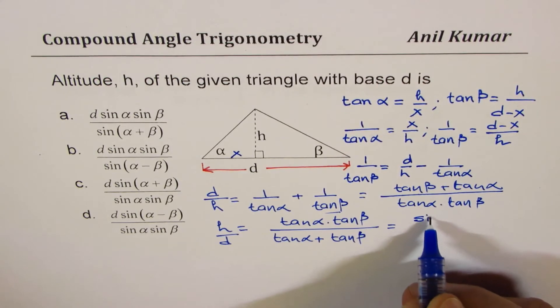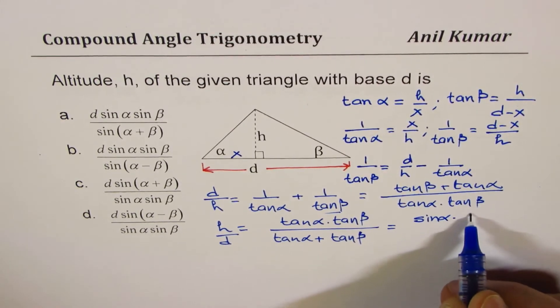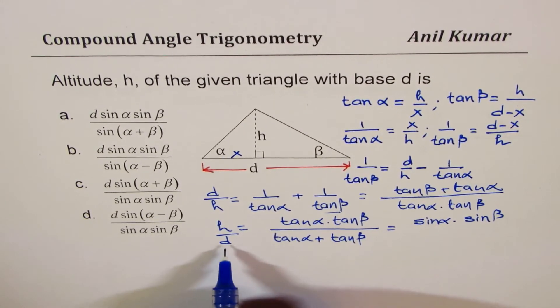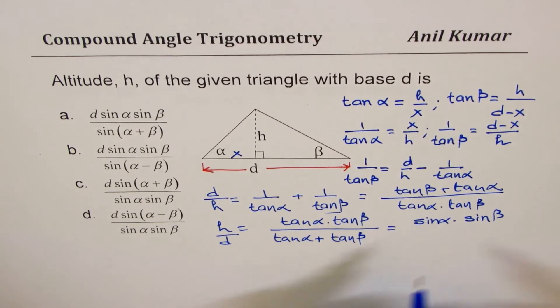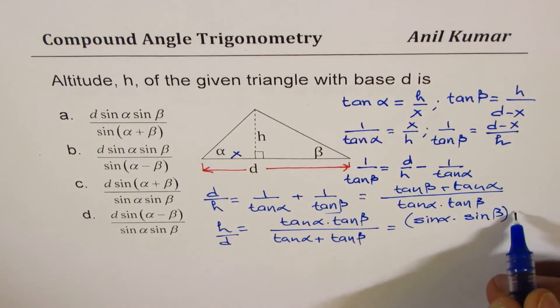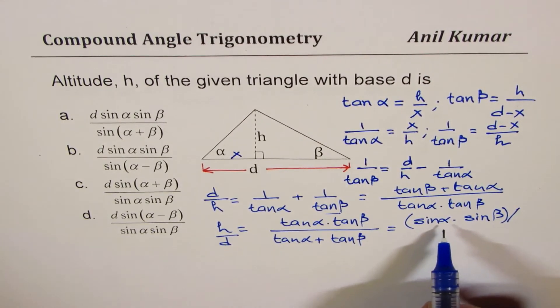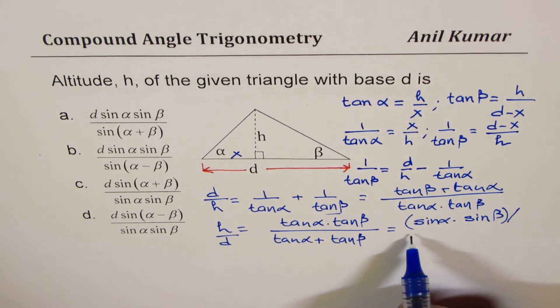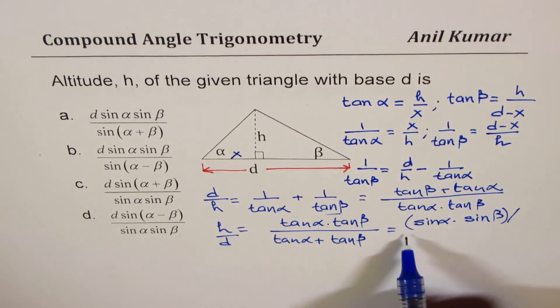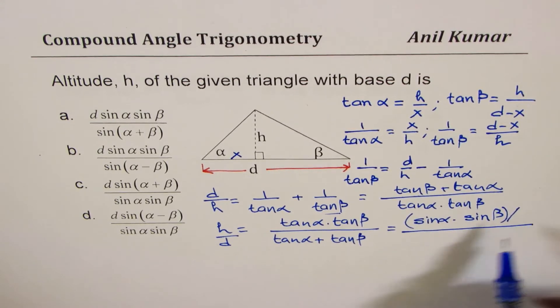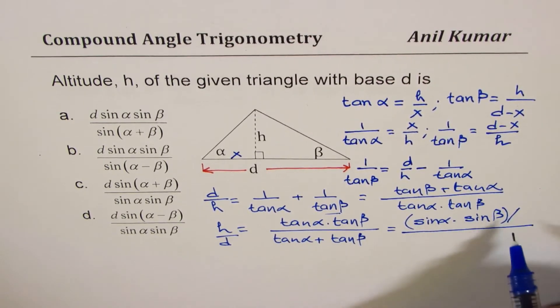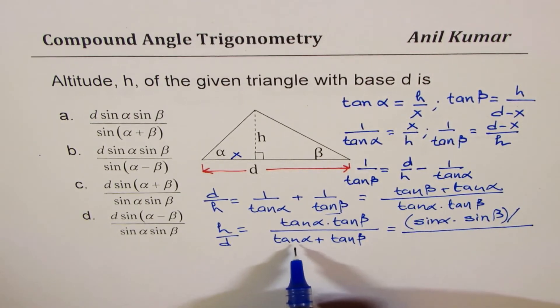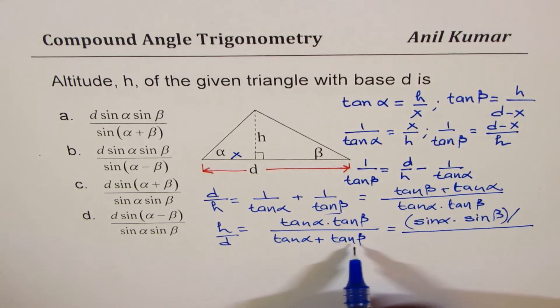So we could write this as sine α times sine β - we know sine α sine β is coming on the top, d can be multiplied with it not a problem - so all this over cos α cos β. So we could also write this cos α cos β here.